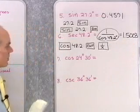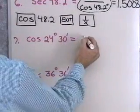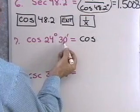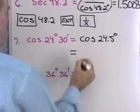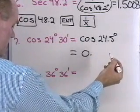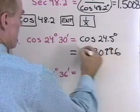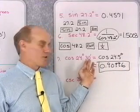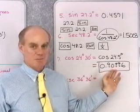For cosine of 24 degrees 30 minutes: most calculators work only in decimal degrees, so convert first. 30 minutes is 30/60 of a degree, which is 0.5 degrees, giving 24.5 degrees. Find the cosine of 24.5, and that comes out to 0.90996 to five decimal places.